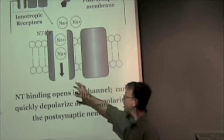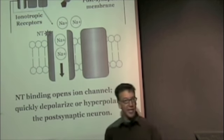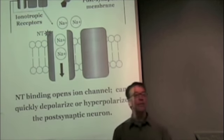So, just to summarize, with an ionotropic receptor, the neurotransmitter binding opens the ion channel within the body, within the structure of the receptor itself. This can quickly depolarize or hyperpolarize the postsynaptic neuron.